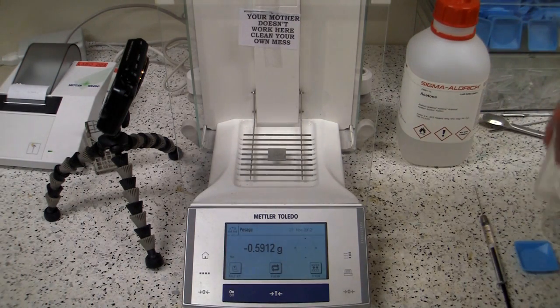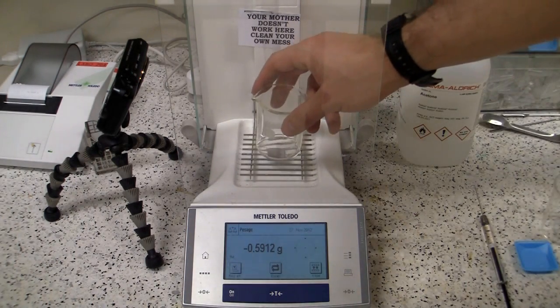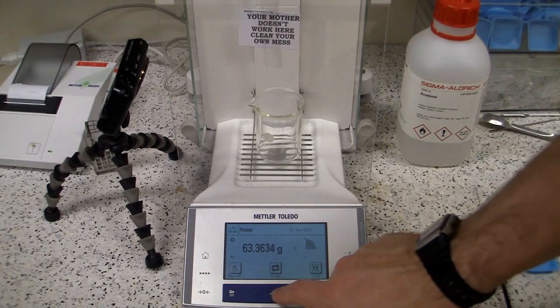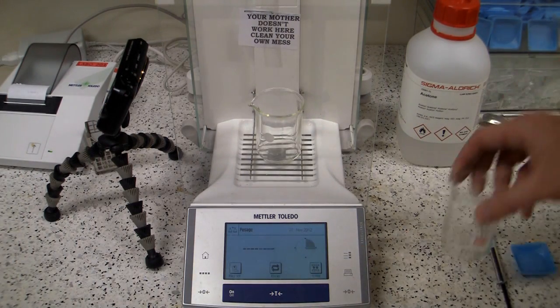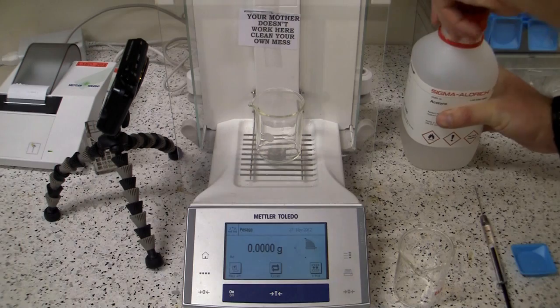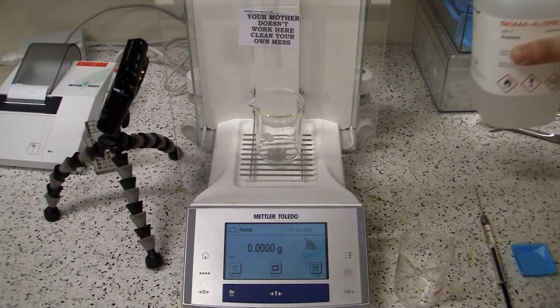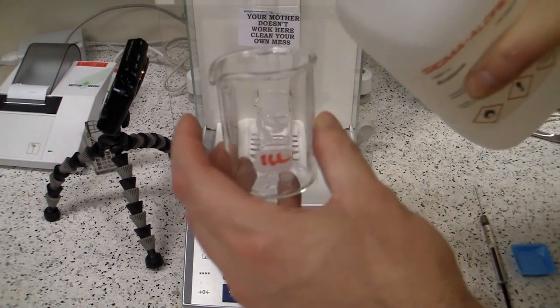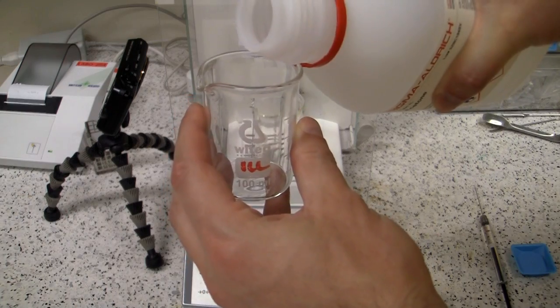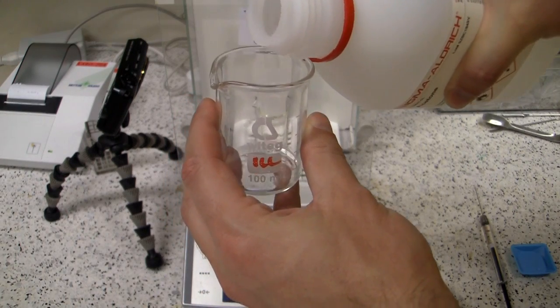So, what I'm going to do is I'm going to get a beaker. Nice empty beaker. I'm going to put it on the balance, zero it up. Then I'm going to get some of my acetone. And I'm just going to put that in the beaker. Just a little like that.